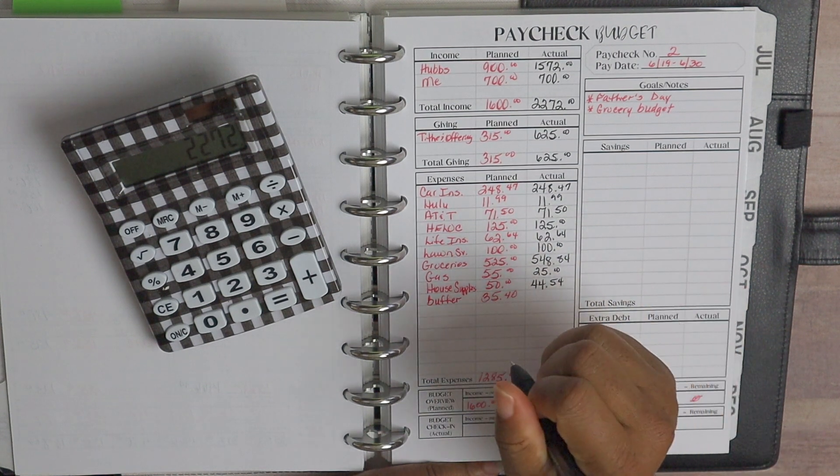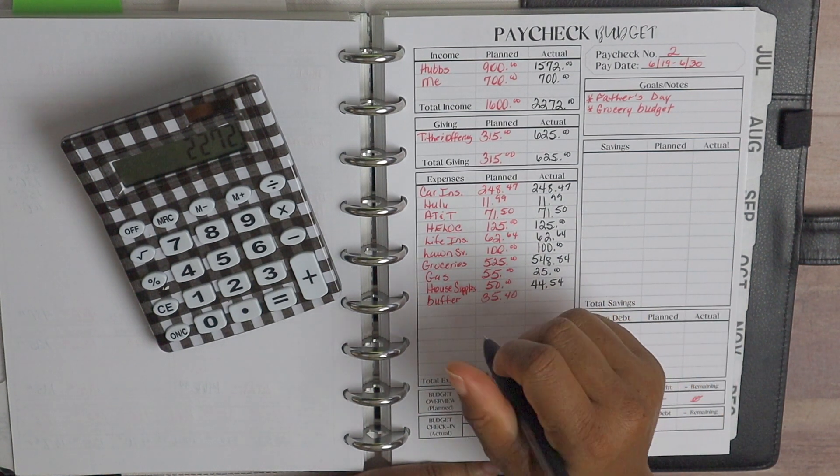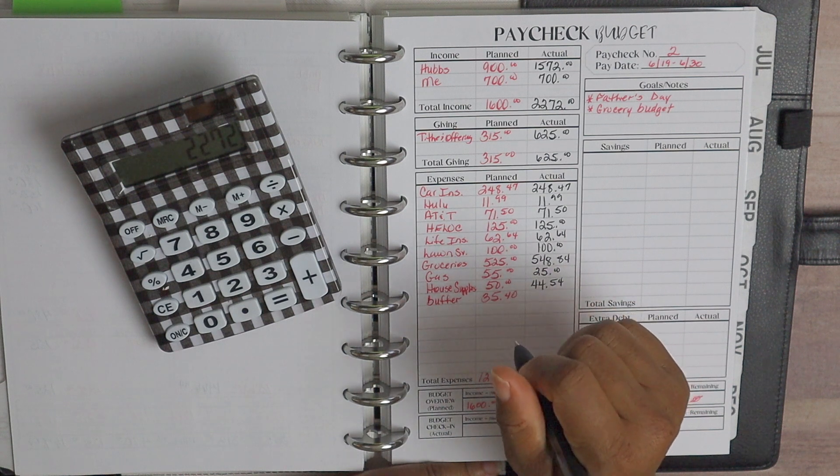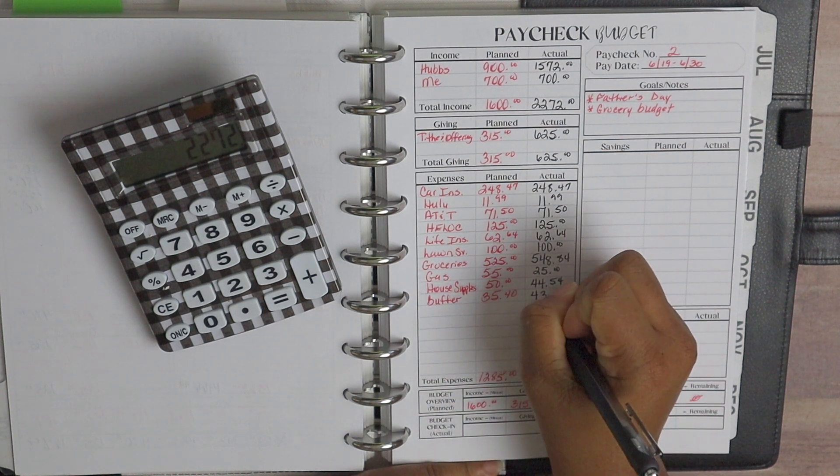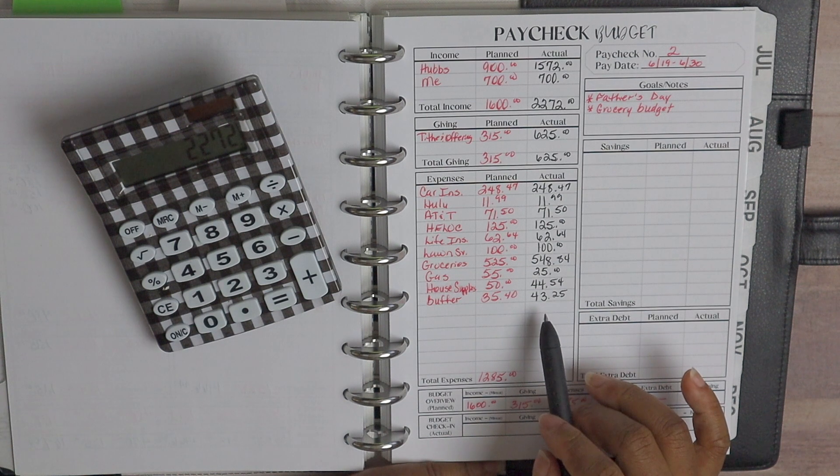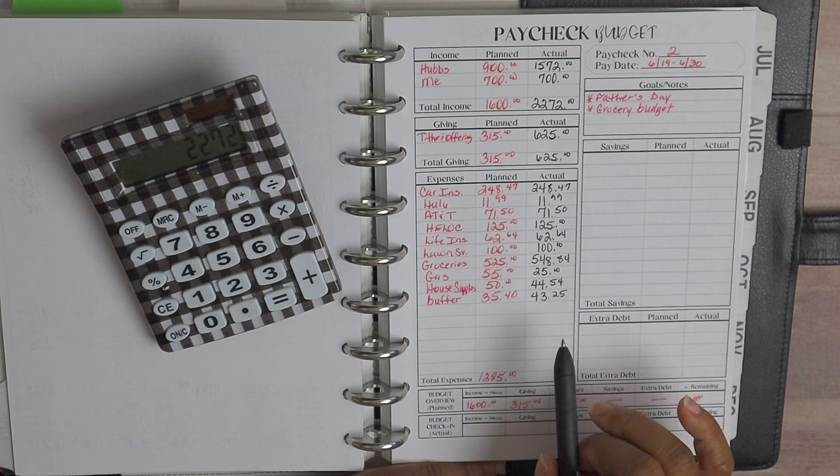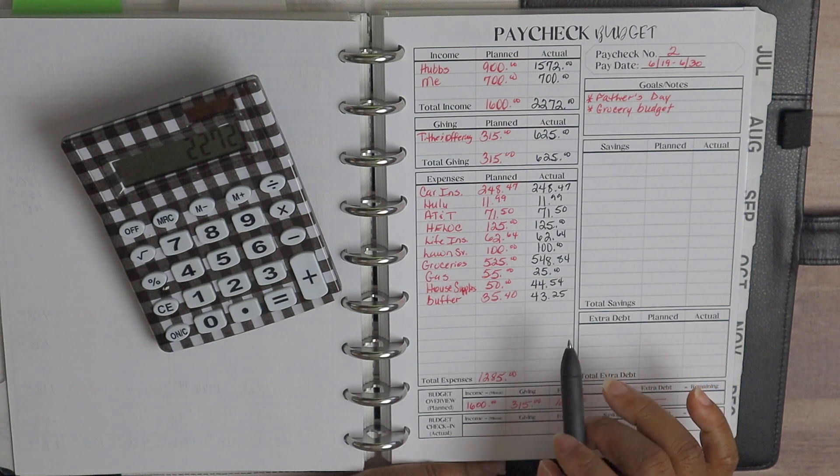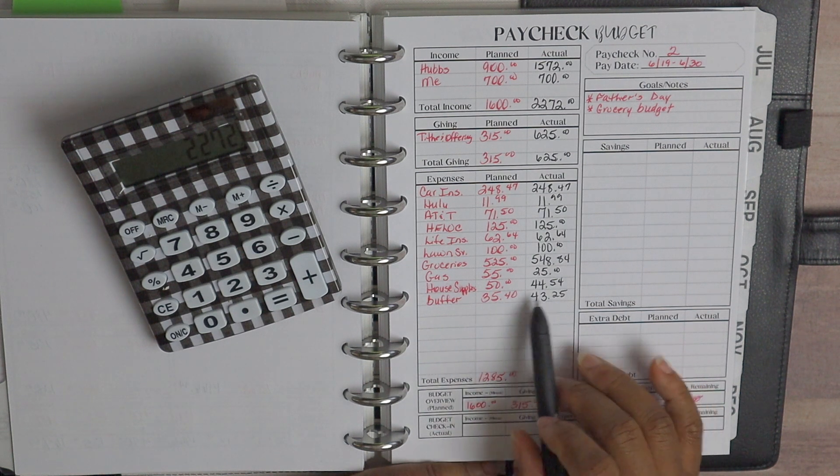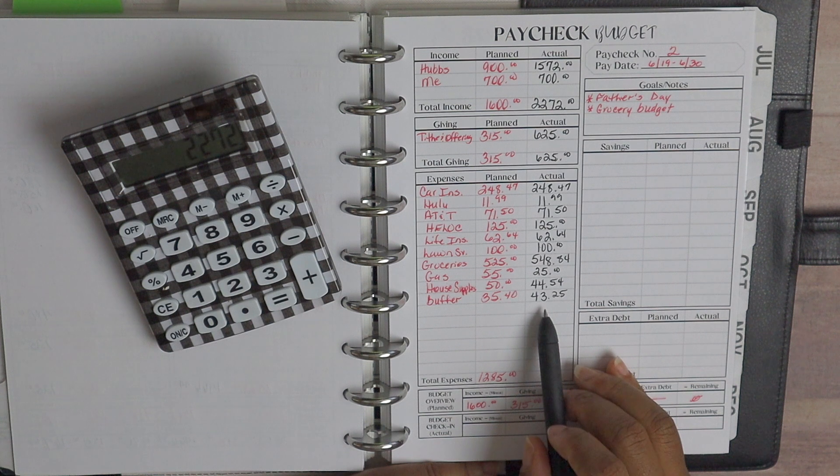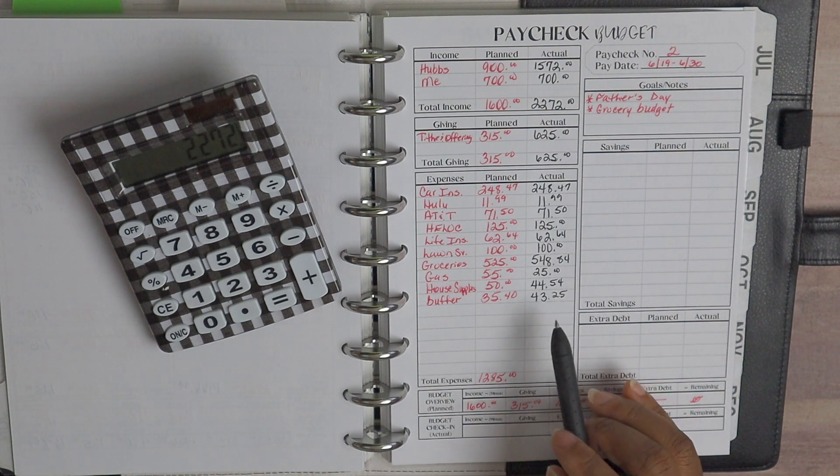And then for our buffer, we ended up going over in our buffer for this particular paycheck. So our buffer, we ended up spending $43.25, and that does encompass us buying bulk stamps and then we also mailed off our tax returns and then something else in here I can't remember right off, but we did go over a little bit in that buffer. Now I did not go over in the buffer for paycheck budget number one, so of course there were some monies that were still there.